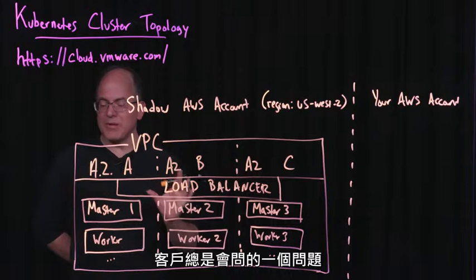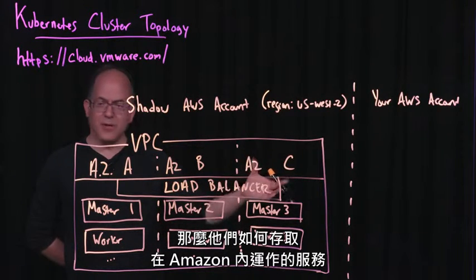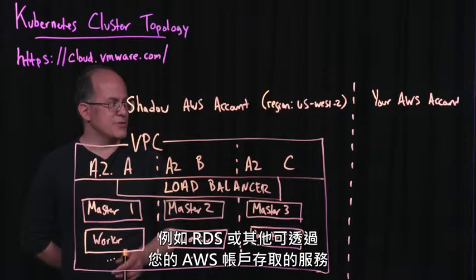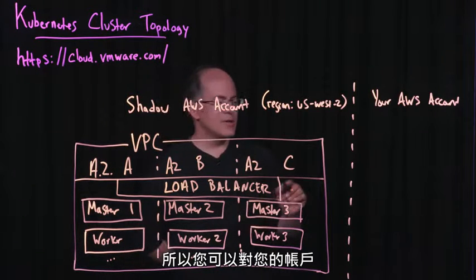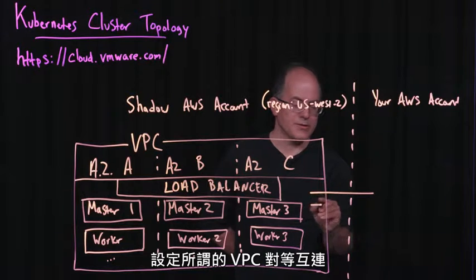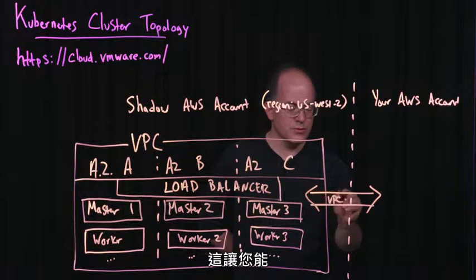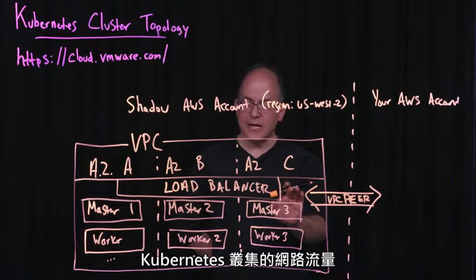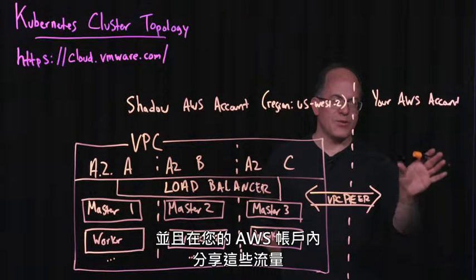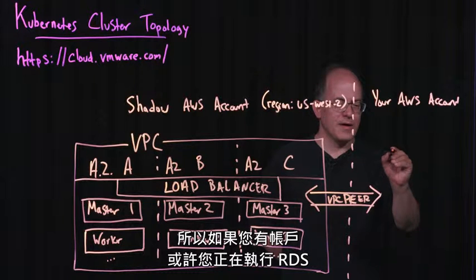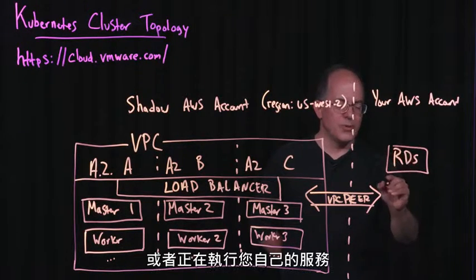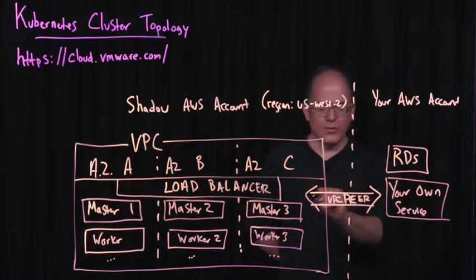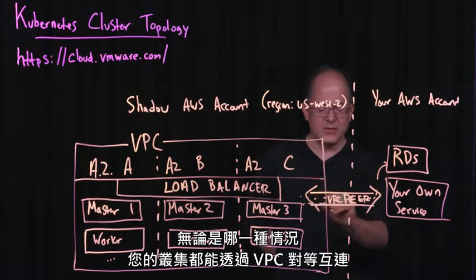One of the questions that people always ask is: if you're managing this, how do I get access to my services that are running in Amazon? Perhaps you're running your own services in your own AWS account, or perhaps you have access to other AWS services like RDS. We allow you to set up what's called a VPC Peer to your account. This will allow you to share network traffic from your Kubernetes cluster in the shadow AWS account into your AWS account — so your cluster is able to access those services through the VPC Peer.